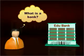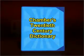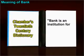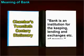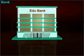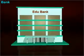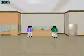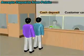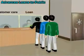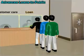What is a bank? Chambers 20th Century Dictionary defines a bank as an institution for the keeping, lending, and exchanges of money. A bank has also been defined by several economists as an institution which accepts deposits from the public and in turn advances loans by creating credit.